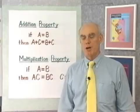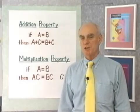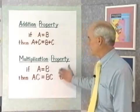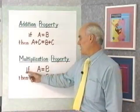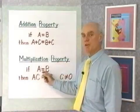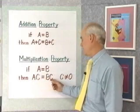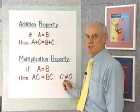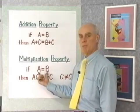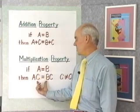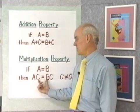We're going to add one more property to our list of properties that we use to solve equations, and it's called the multiplication property for equality. It says that if A and B are equal, then so are A times C and B times C, as long as C is not equal to 0. The equation A equals B and the equation AC equals BC always have the same solution set.